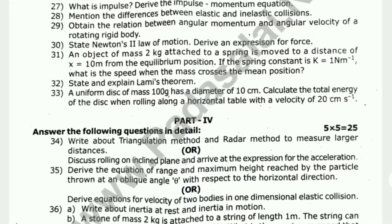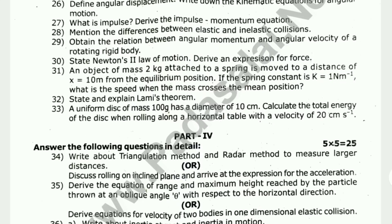Next, part 3, 3 marks. Compulsory question 33: A uniform disc of mass 100 grams has a diameter of 10 cm. Calculate the total energy of the disc when rolling along the horizontal table with a velocity of 20 cm per second.